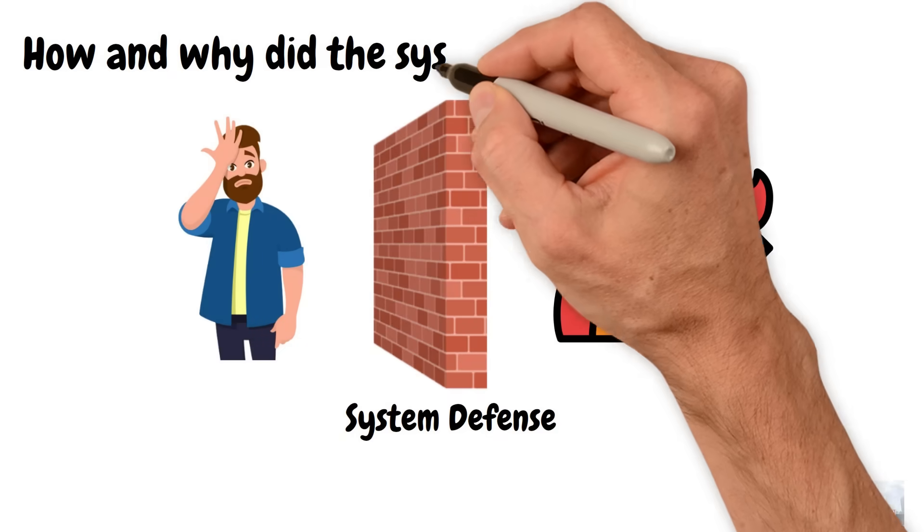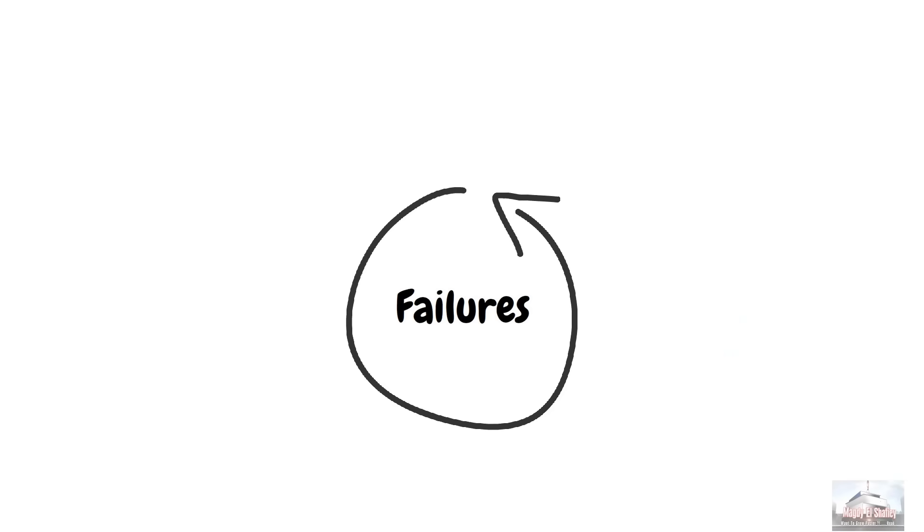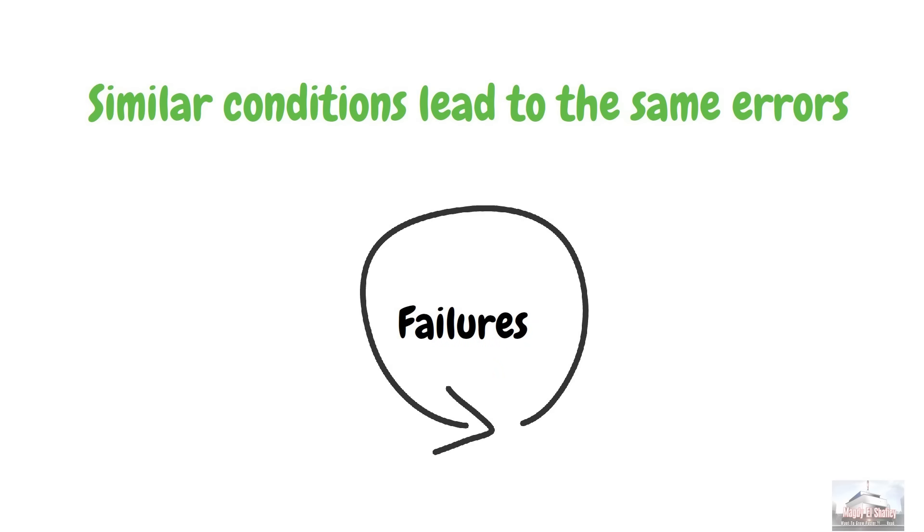Failures tend to fall into repeated patterns. Similar conditions can lead to the same errors, no matter who was involved. To improve safety, we must focus on fixing the system itself, rather than just blaming individuals.